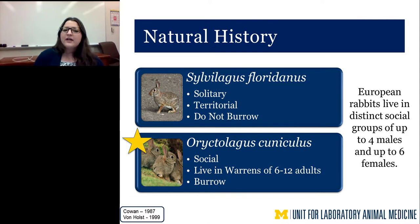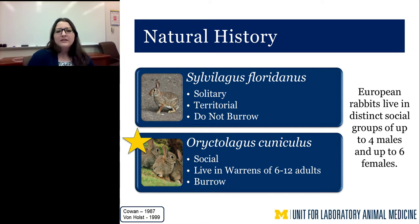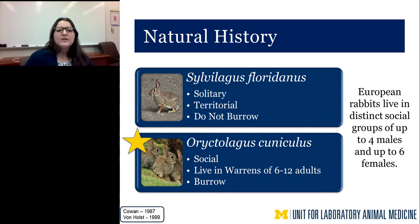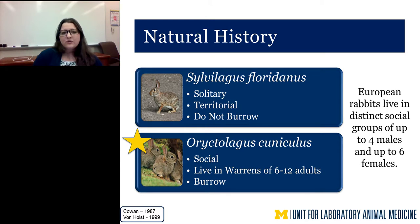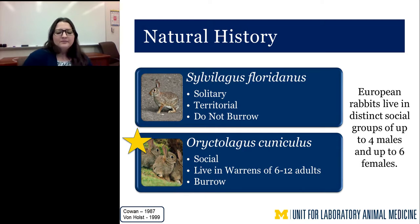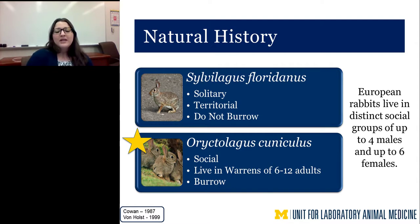Comparing the two: Sylvilagus are the solitary, territorial backyard rabbits that don't burrow. However, Oryctolagus — the European rabbits and ancestors of our New Zealand whites — are a social species. They live in warrens of about six to twelve adults, create complex underground burrows with many entrances, and can live in distinct social groups of up to four males and up to six females. This confirms that the New Zealand white's natural history is as a social species.